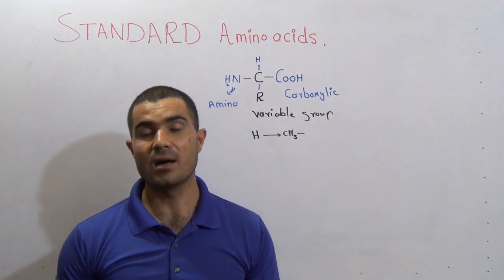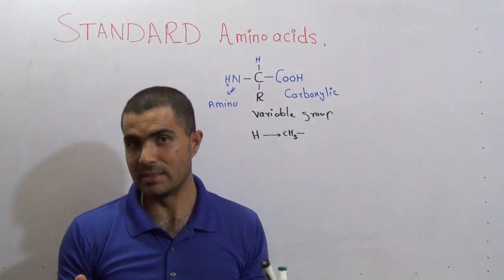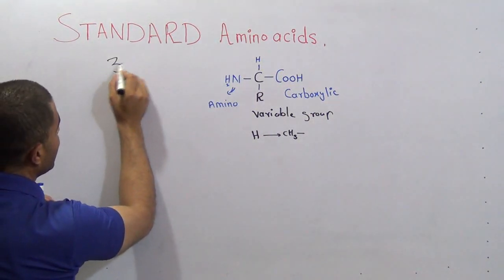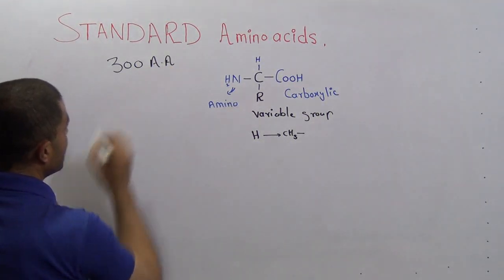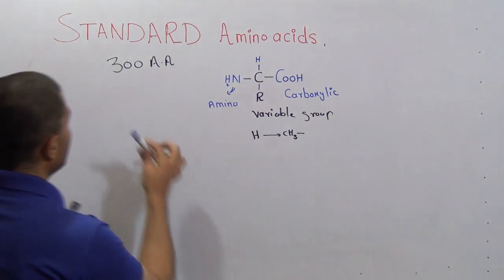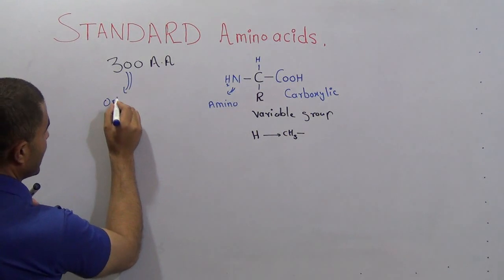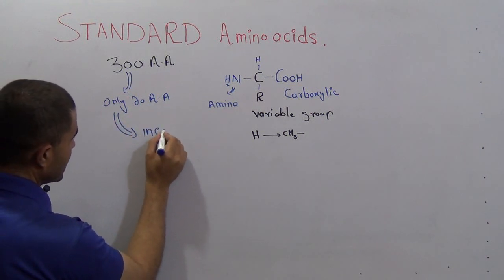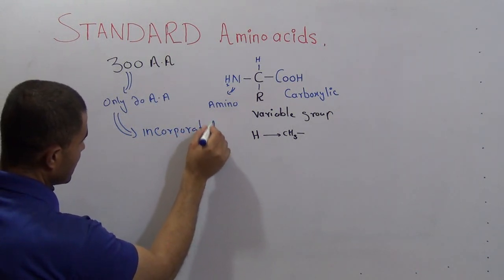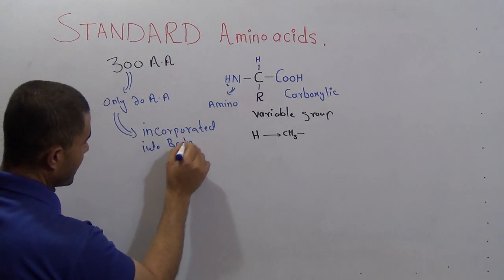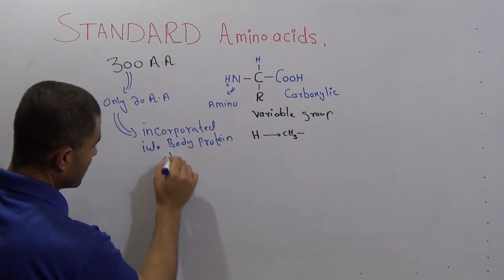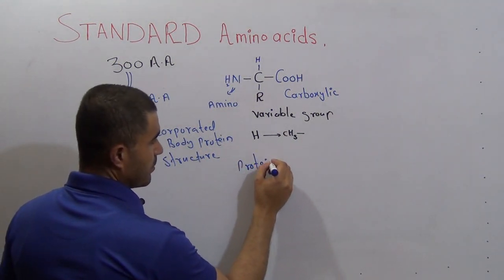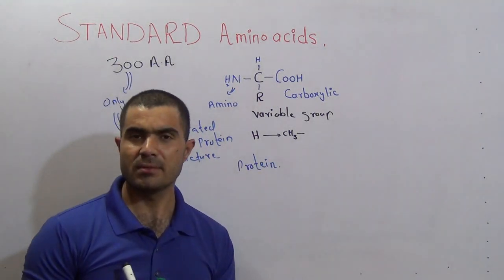Now, what is a standard amino acid? My dear students, there are more than around 300 amino acids in the world, but out of these 300 amino acids, we have only 20 amino acids that are incorporated — meaning added — into the body's protein structure.